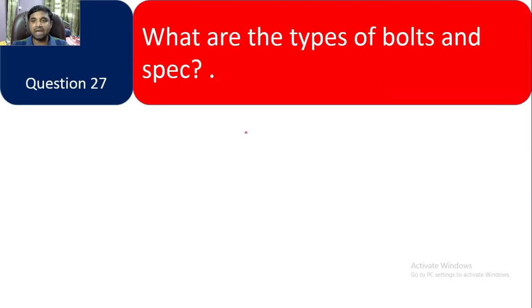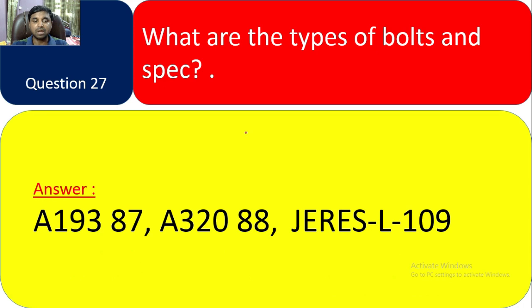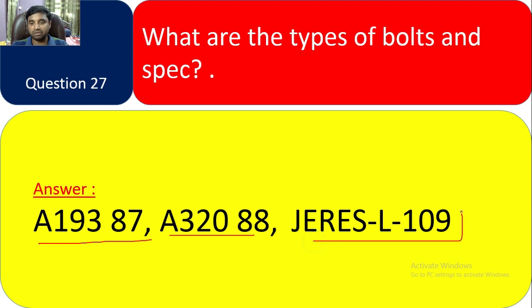Question 27: What are the types of bolts and their specs? Answer: A193-B7, A320-B8, and A-GR-109. You can check in Aramco — all these bolts and nuts types and specs are mentioned there.